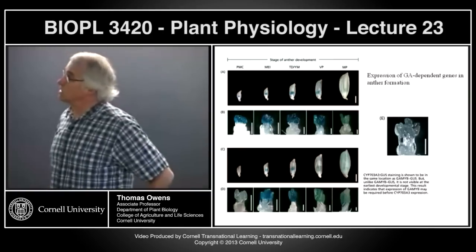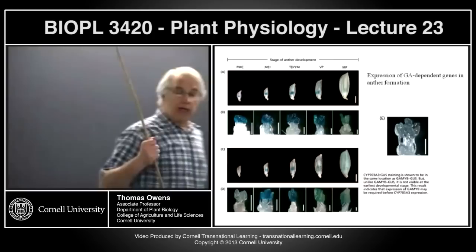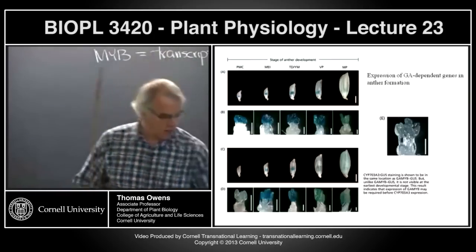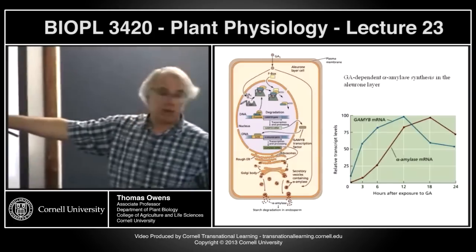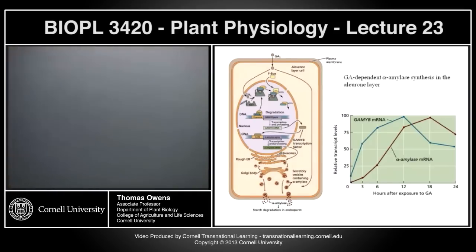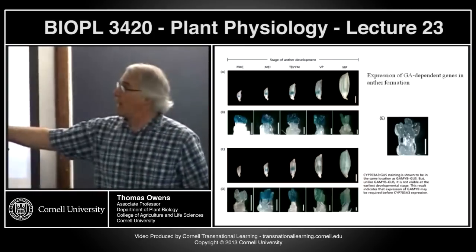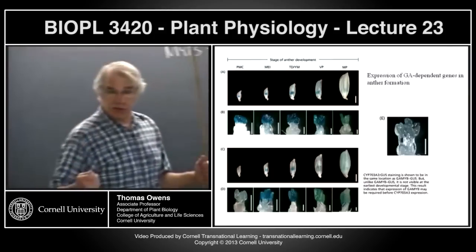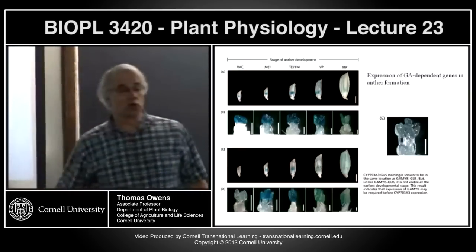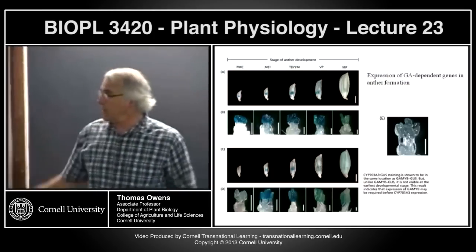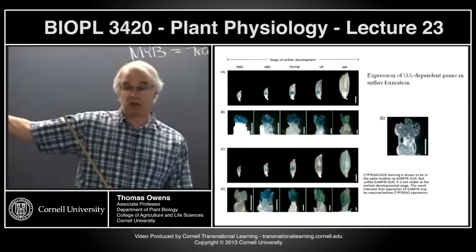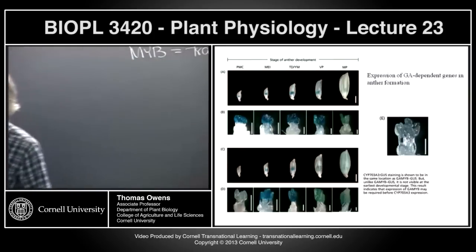Regulation of pollen development in flowers is important from both an agricultural and biological perspective. The illustration shows a construct that takes the promoter for the GA-MYB gene — not from the aleurone layers but from developing anthers — and puts GUS behind it. This shows the expression of the GA-dependent transcription factor in the flower and developing anthers. Strong expression of that transcription factor appears early in anther development.